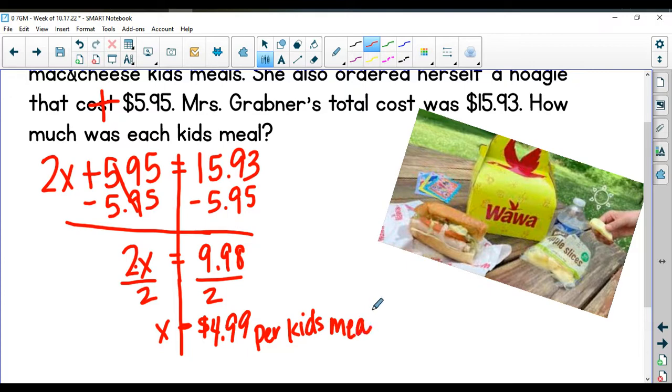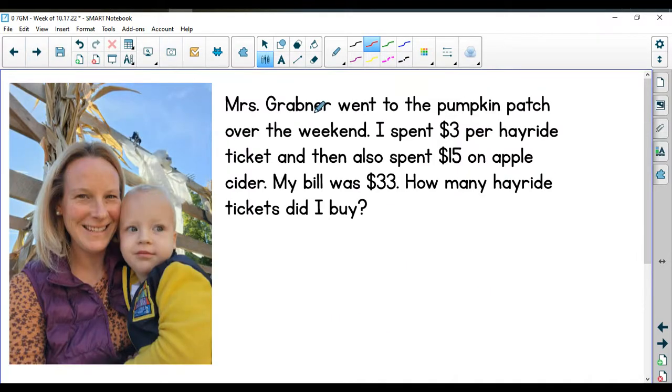On your last example before your quiz today, Mrs. Grabner went to the pumpkin patch over the weekend. I spent $3 per hayride ticket and then also spent $15 on apple cider. My bill was $33. How many hayride tickets did I buy? First thing you're going to do is identify which of these three numbers is going to get the x. Which one's going to be your equals number? And then finally, which one's just going to be our plain old number? Take a minute and set up your equation to solve this, putting the number that goes with the x with that, adding or subtracting the plain old number, and then setting it equals to your equals number, and then solve to figure out how many hayride tickets I bought.